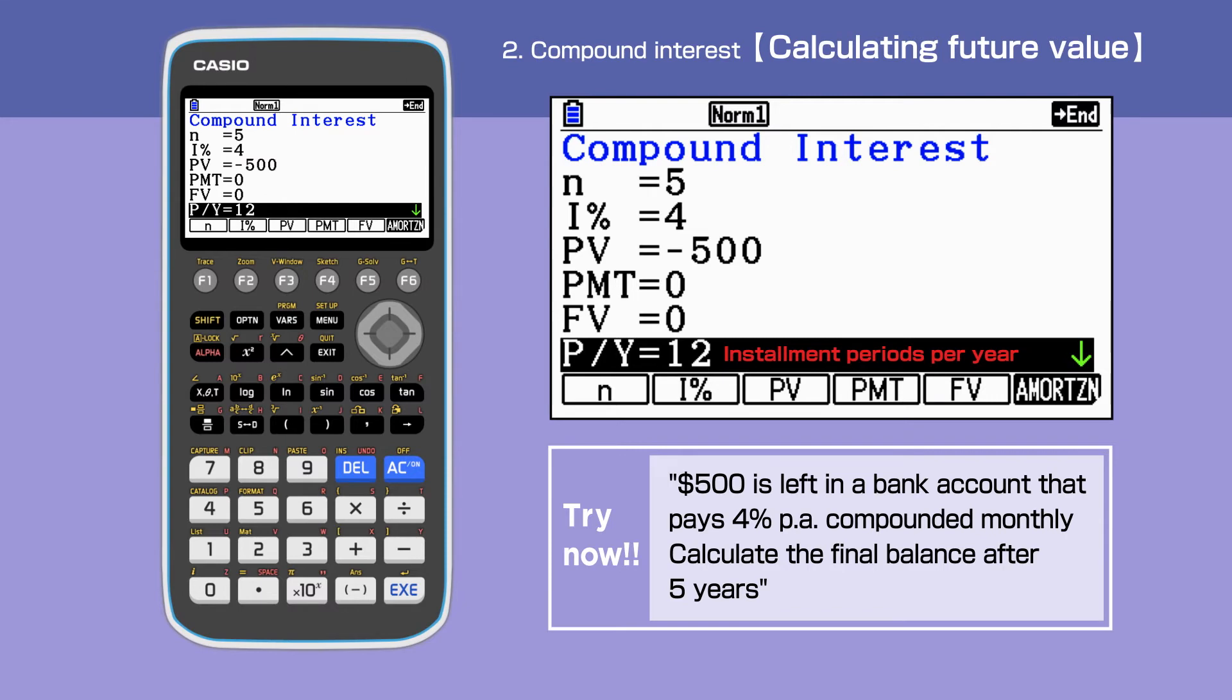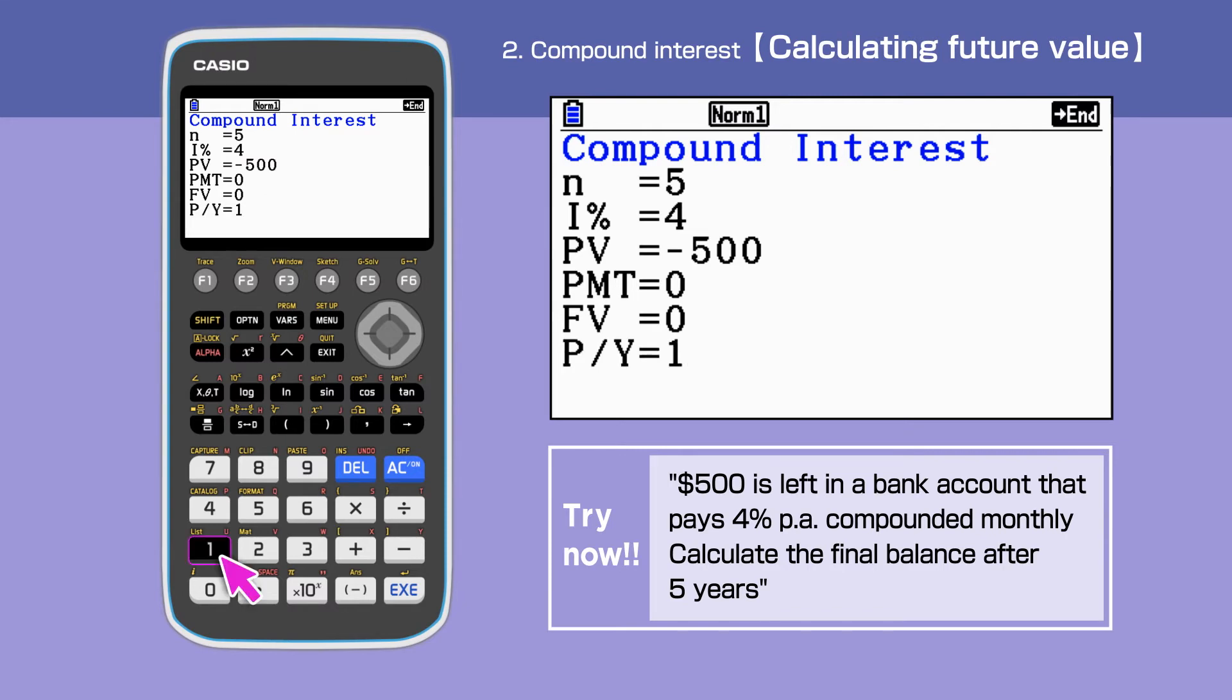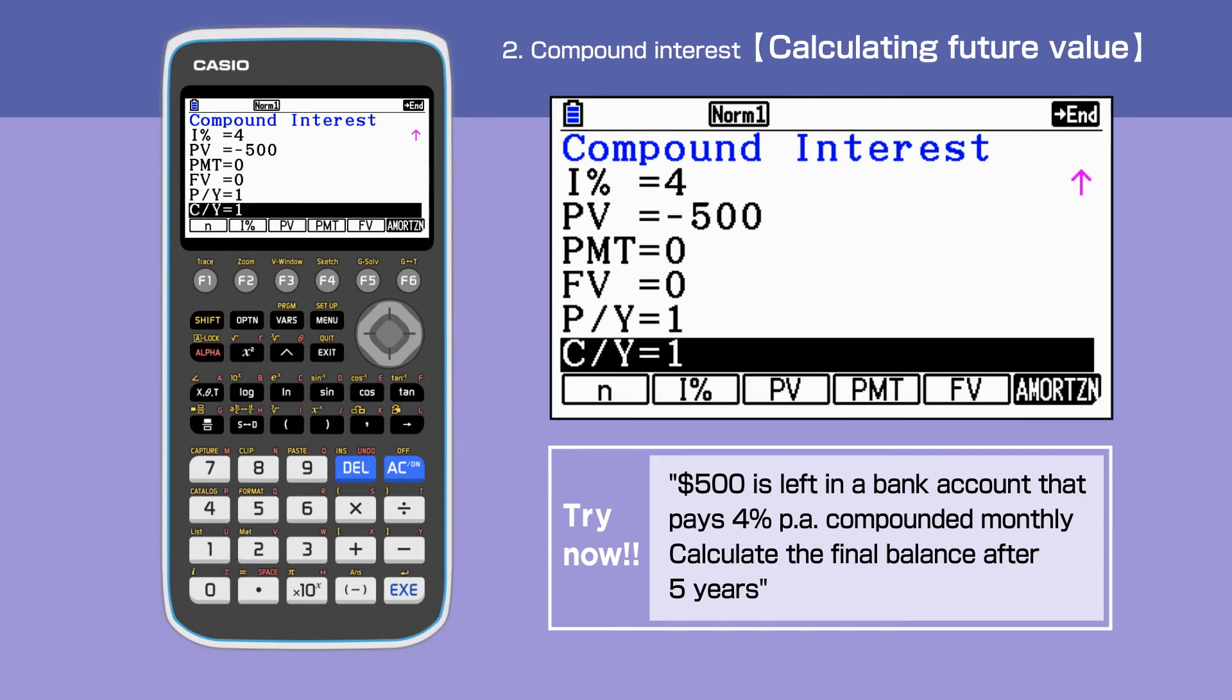Finally, for P per Y is 1, and C per Y is 12, as it is compounded monthly.